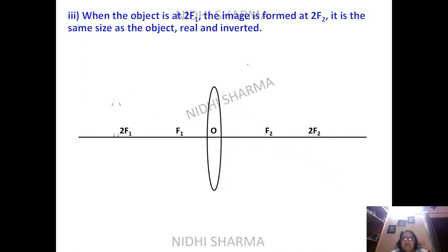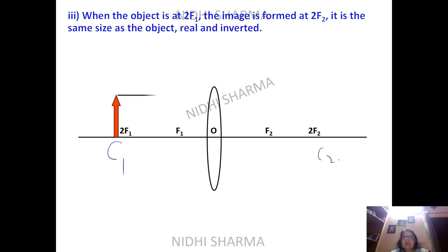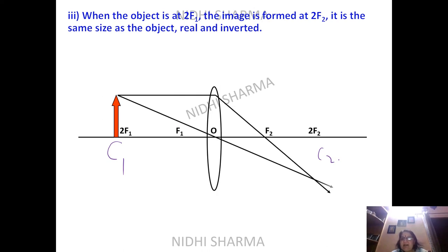With the object at 2F1, the image is formed at 2F2 — the C1/C2 case. A parallel ray passes through F2, another passes through the optical center, and they meet at 2F2. You get the same size as the object, real and inverted — a special case.